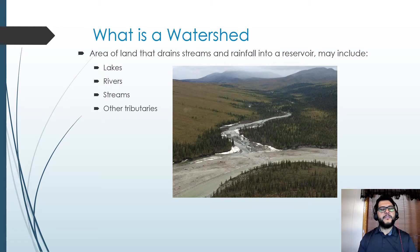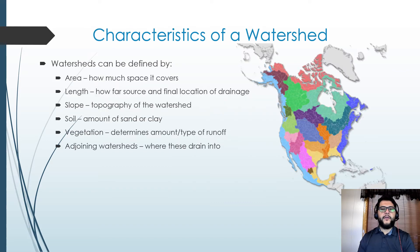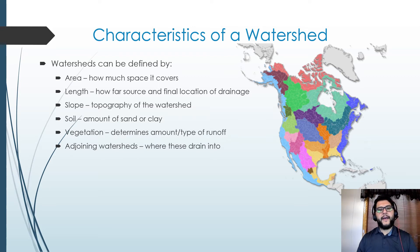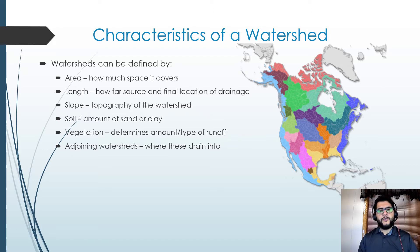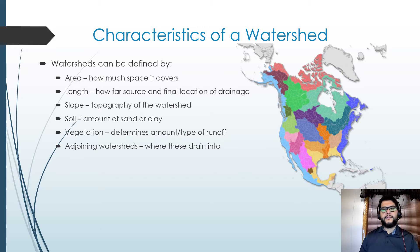Now one thing you're going to see is there's a typical pattern, at least here in North America and even Central America, that these watersheds tend to follow. As you can see right here, all these different colored watersheds are the different ones from North America and Central America. These are all defined by different things — typically the main ones are: area, which is how much space it covers; and length, which is how far it is from the source to the final drainage location.